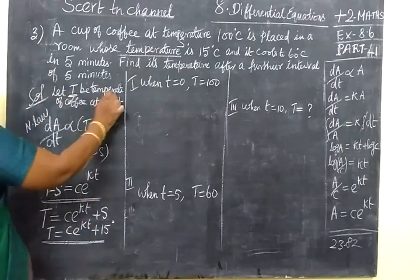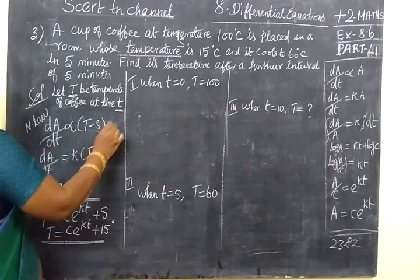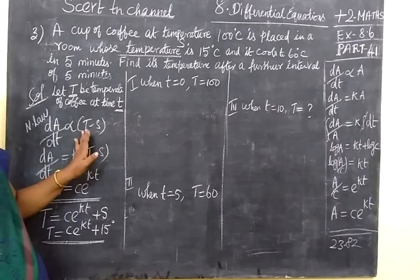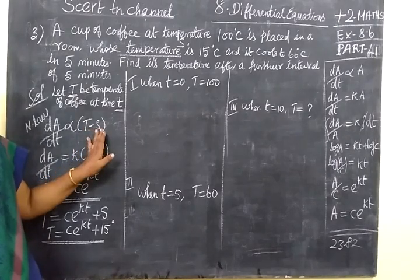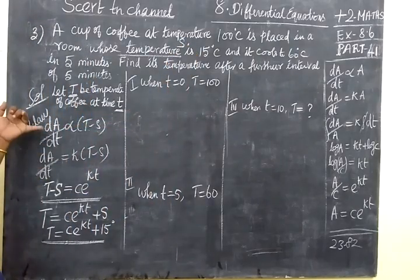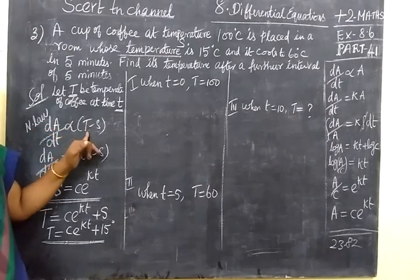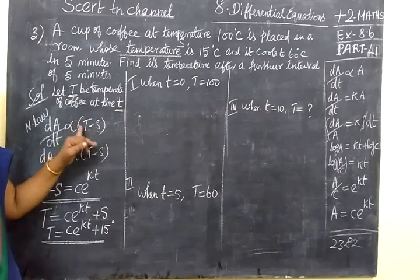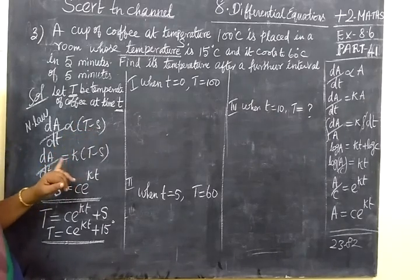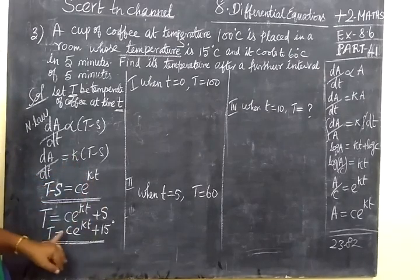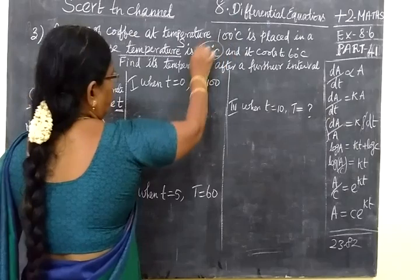Let T be the temperature of the coffee at time t. By Newton's Law of Cooling, the rate of change of coffee temperature is proportional to T minus S, giving the general solution T minus S equal to C times e to the power kt. The room temperature S equals 15 degrees.